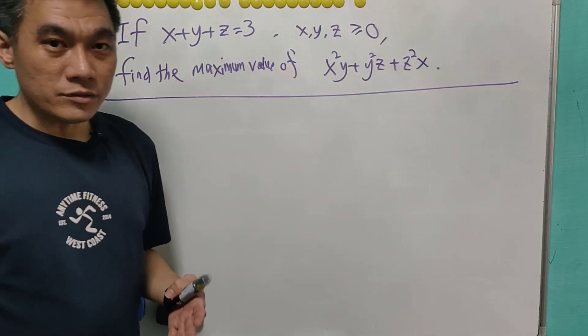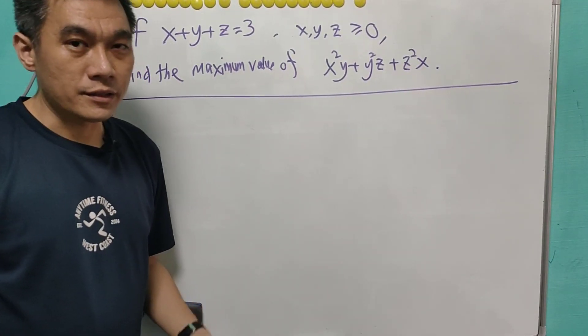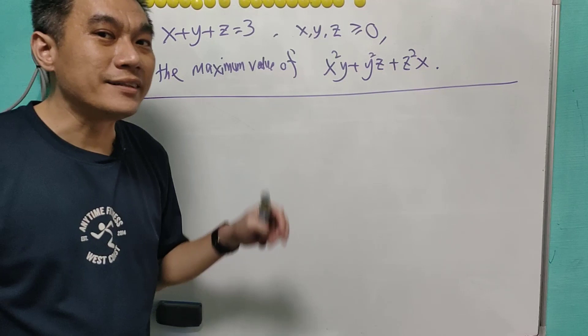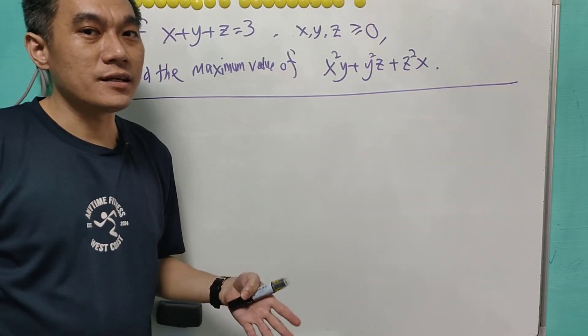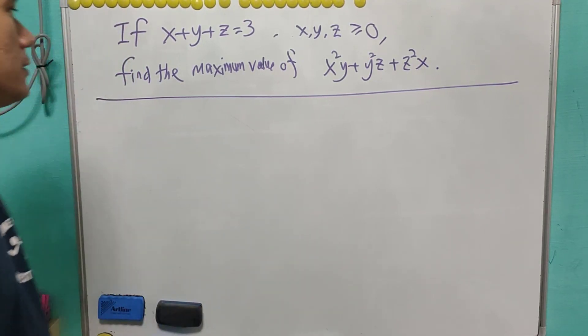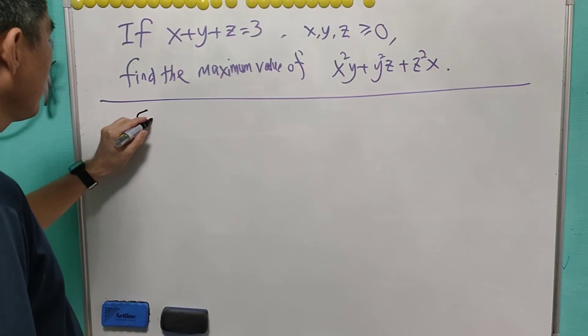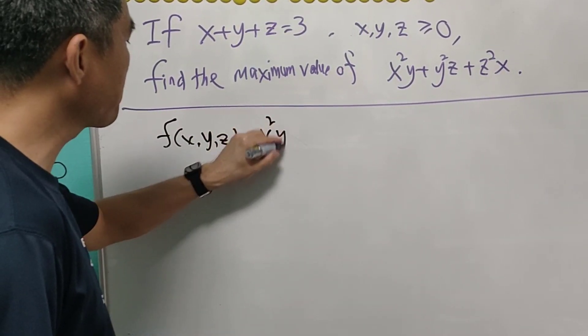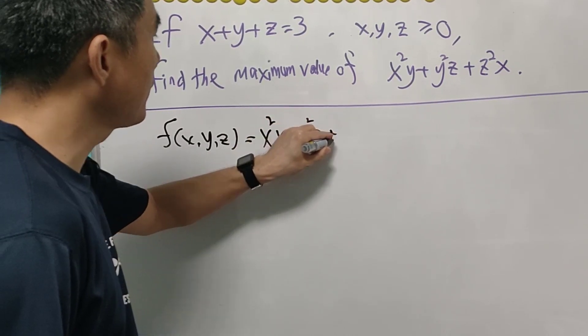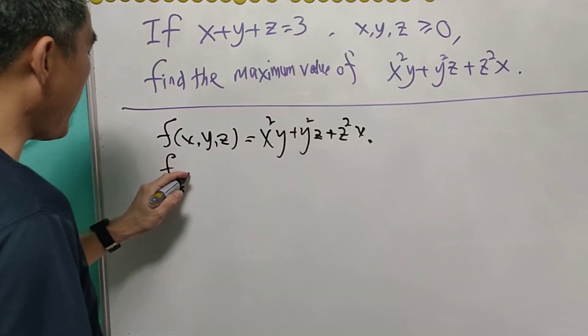Now I'll quickly demonstrate how to use the Lagrange multiplier to get the so-called answer. And later on, at the end of the video, I'll explain why this answer is not correct. So using the Lagrange multiplier, we should let this as f of x, y, z, and it is x squared y, y squared z, and z squared x.